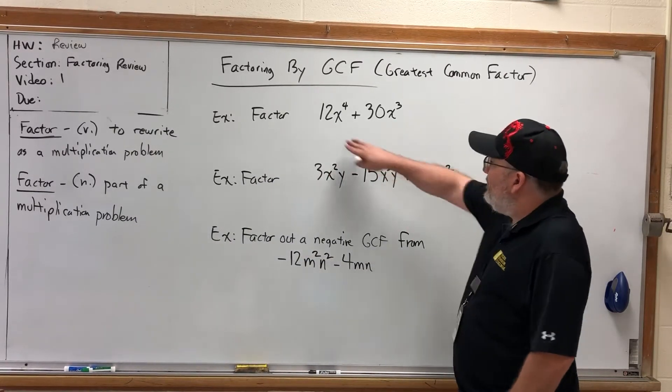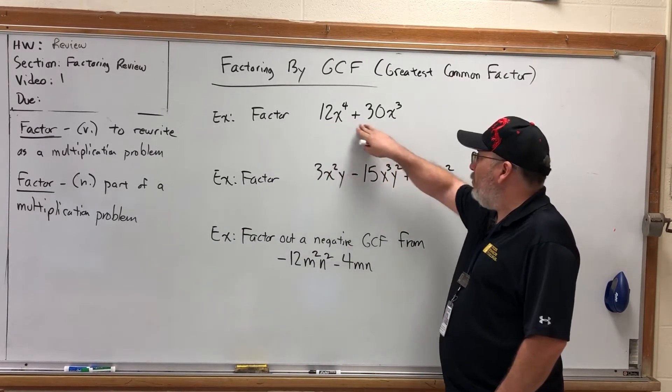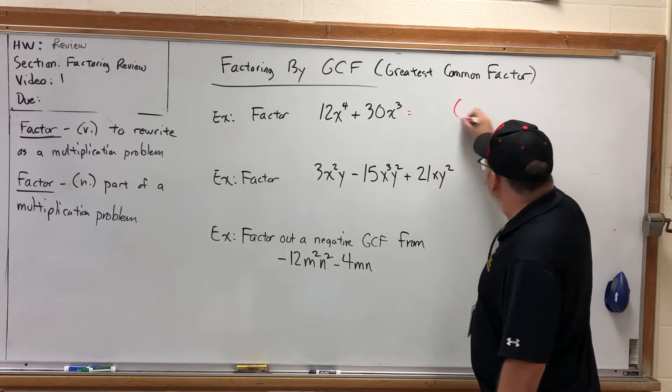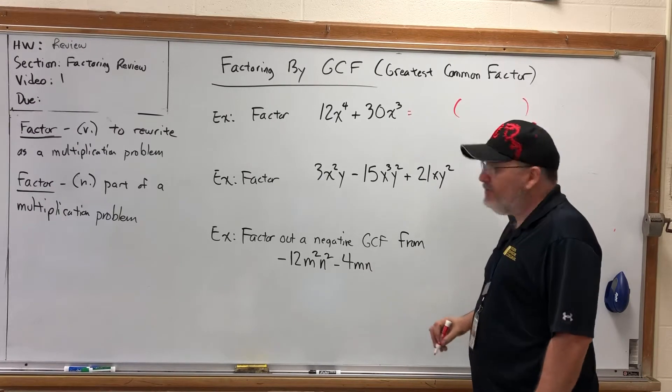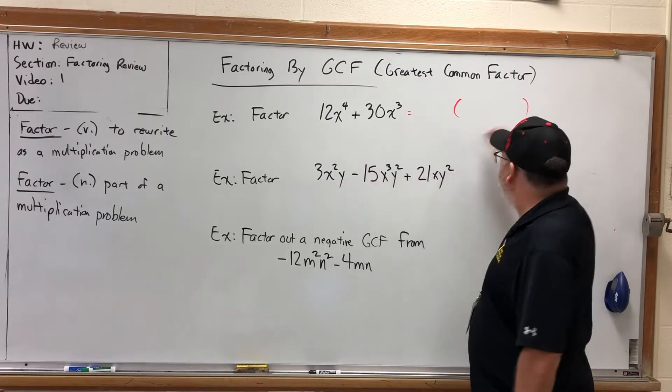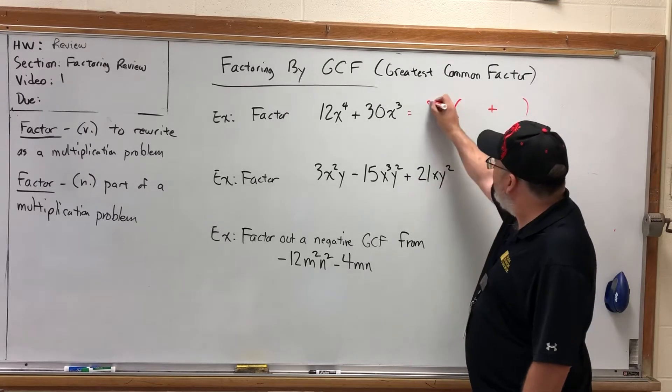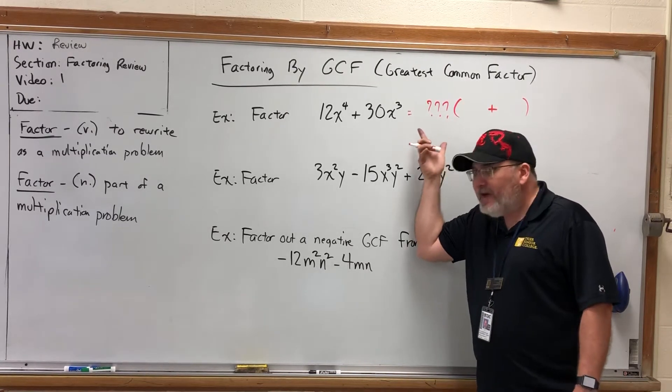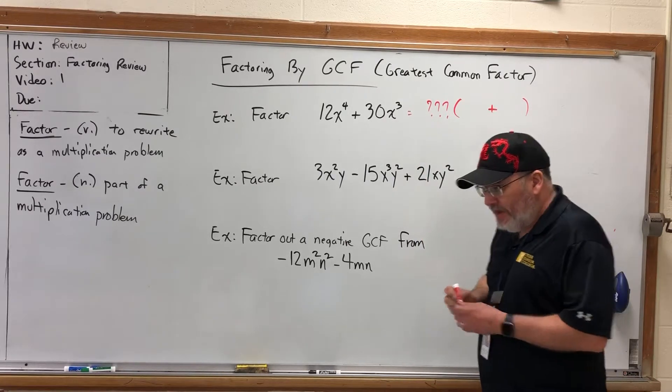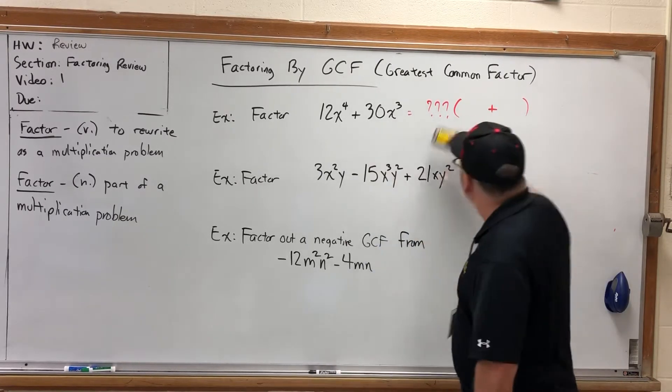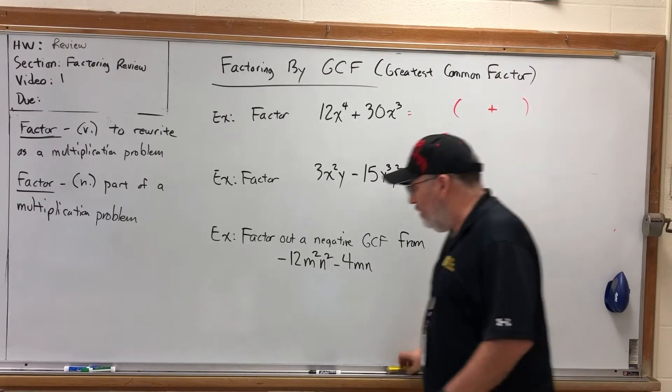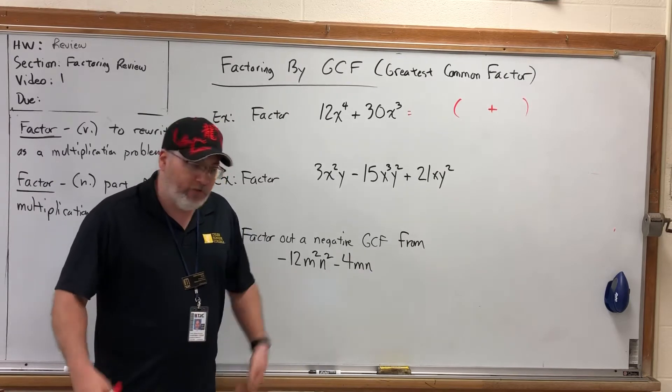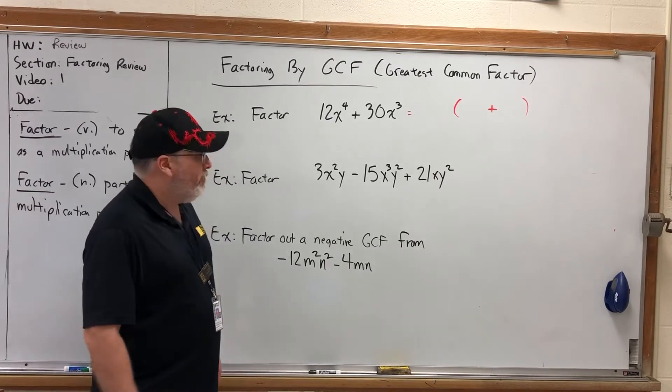For example, let's take a look at the first one. Factor 12x to the fourth power plus 30x to the third power. What you're thinking is there was a distributive property problem that happened. Because this expression has two terms, we're going to have two terms in the parentheses. And we want to figure out what is the largest chunk, the greatest factor, that we can put in front as the part that got distributed.